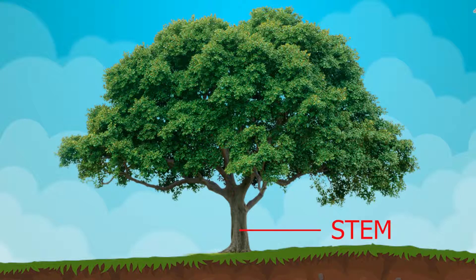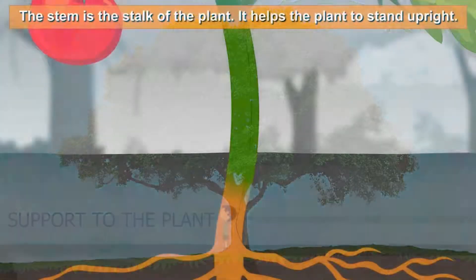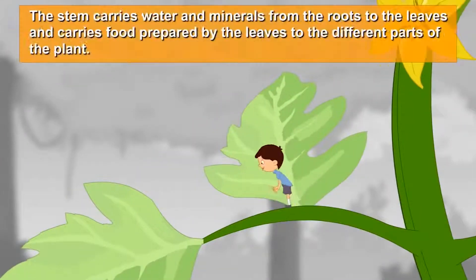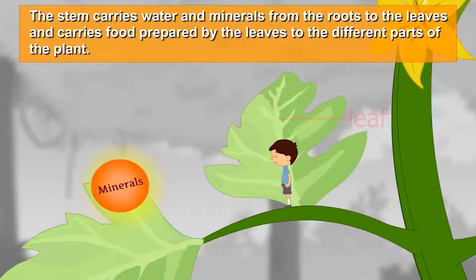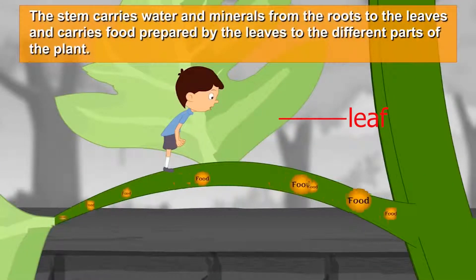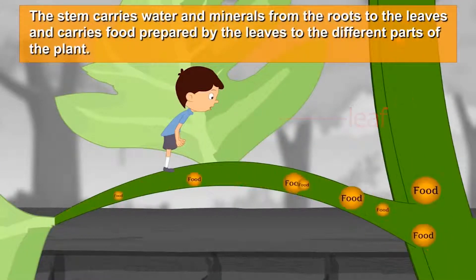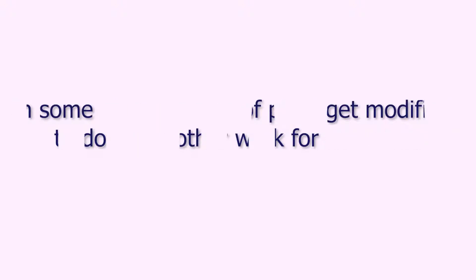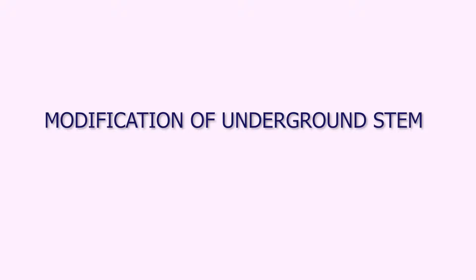Stem generally provides support to the plant. It also transfers nutrients and water from roots and food from leaves to different parts of the plant. In some plants, stems get modified to do some other work. In this video, we will learn about modification of underground stem.